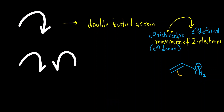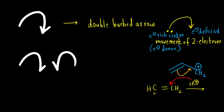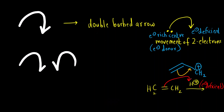Another very common mistake: suppose I have an alkene reacting with H+. H+ is electron deficient, but people tend to draw the arrow as if the reagent is attacking the reactant. That is incorrect because H+ is electron deficient and has no electrons. The correct arrow should show the pi electrons attacking the electron-deficient H+. Always remember: the arrow starts from an electron-rich center and ends at an electron-deficient center. This arrow shows movement of two electrons.